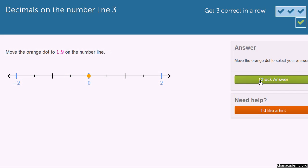Let's do a couple more of these. Move the orange dot to 1.9 on the number line. So it seems like we have the same scale as in the previous example. This gets us to 1. In fact, this is 0.5, 1, 1.5.